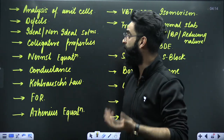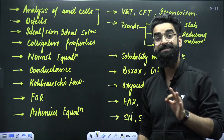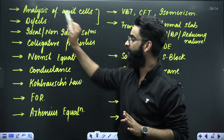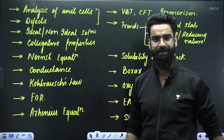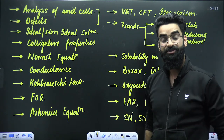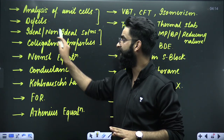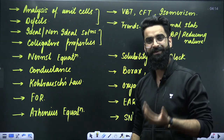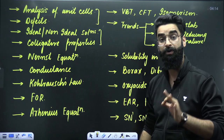Moving on to solid state: the two important topics are analysis of unit cells — covering all unit cells in detail — and defects, from which a theoretical concept is asked in NEET. For the chapter solutions, two very important topics are ideal and non-ideal solutions, and all the colligative properties such as relative lowering in vapor pressure, elevation in boiling point, and so on. Do not leave these at any cost.